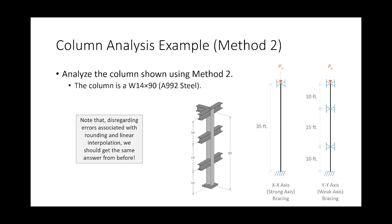Your homework assignment is to analyze columns using Method 1. Pay attention to the boundary condition symbols — some look like pins, some have a box, and those are different conditions in the table. Also, our prospective student guests are visiting on Friday, so please be on time and on your best behavior. See you Friday.